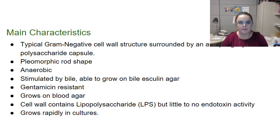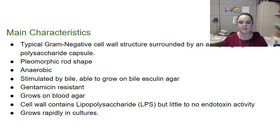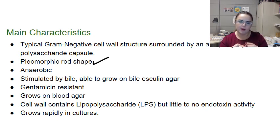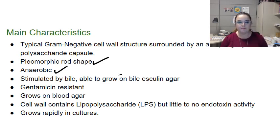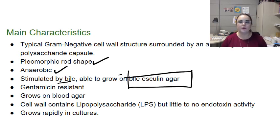So what is it? It's a typical gram-negative organism, so the cell wall structure is surrounded by an antiphagocytic polysaccharide capsule. That capsule is actually really slimy, and therefore anytime a phagocyte reaches out to engulf that organism, it just slides away — like trying to grab an egg yolk. It has a pleomorphic rod shape, meaning it can range from coccoid to vibrio-like to completely rod-shaped. As mentioned, it's anaerobic. It's also bile resistant — in fact, it actually really likes bile, which makes sense since it lives in our gastrointestinal tract. It's stimulated by bile and grows well on bile esculin agar, showing that nice dark black color indicating good growth.